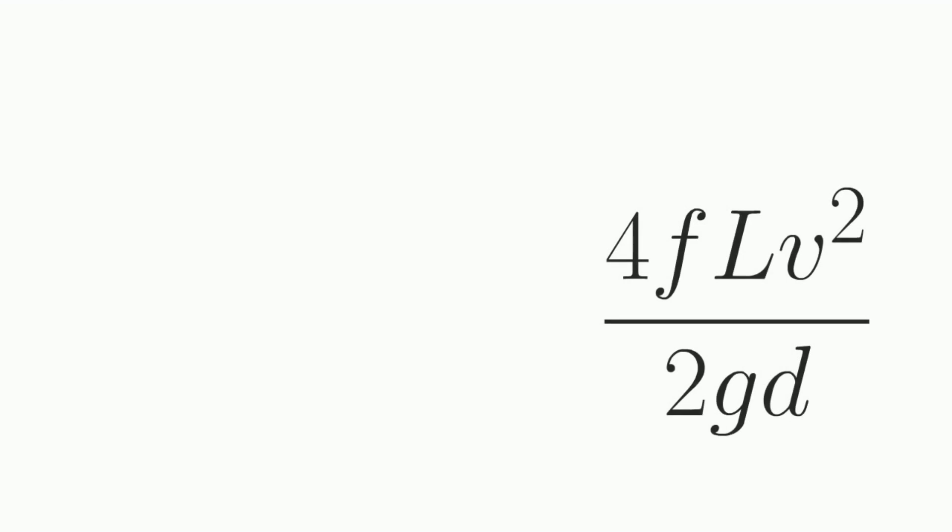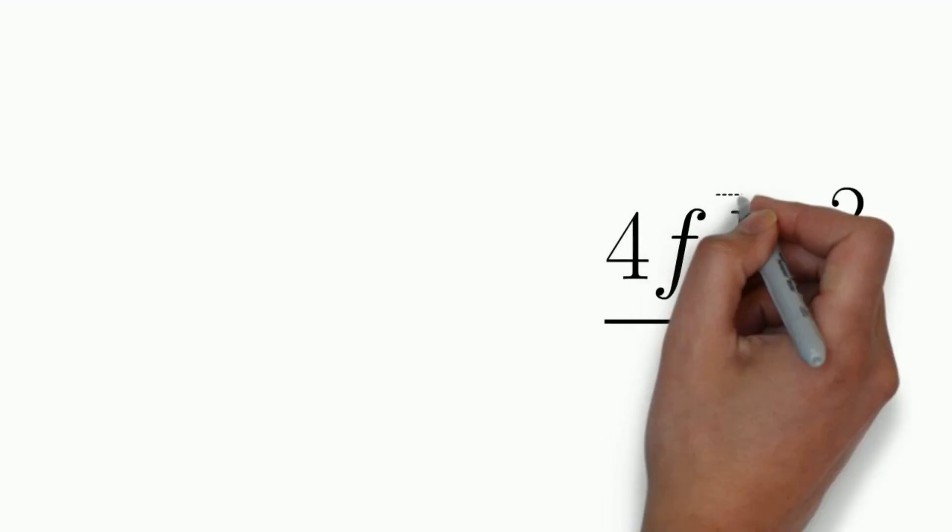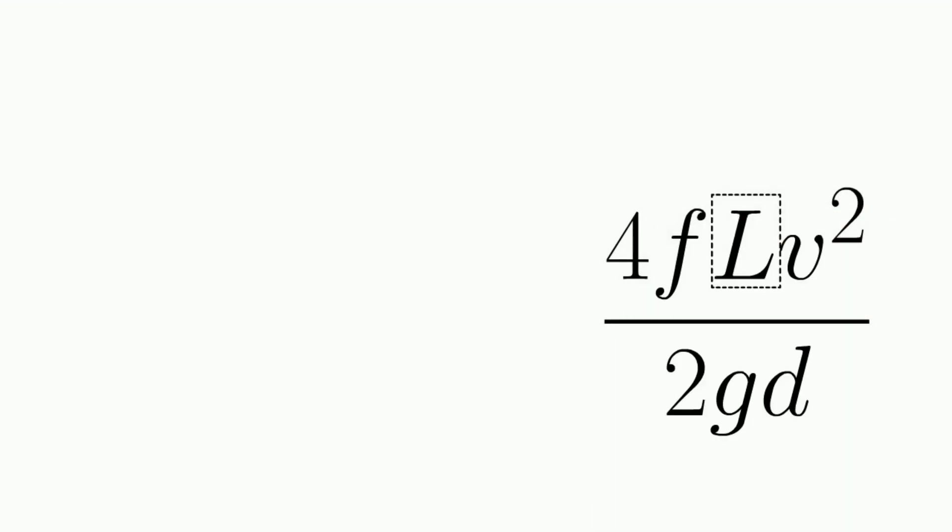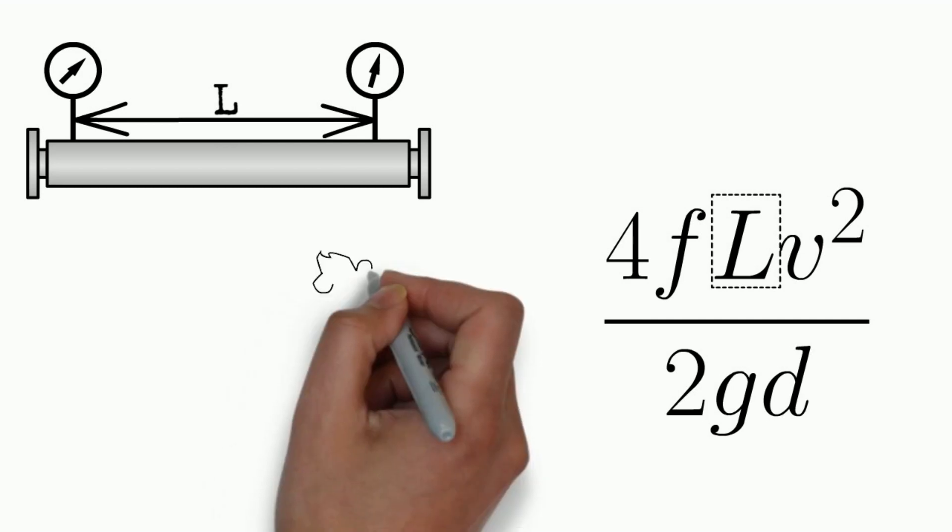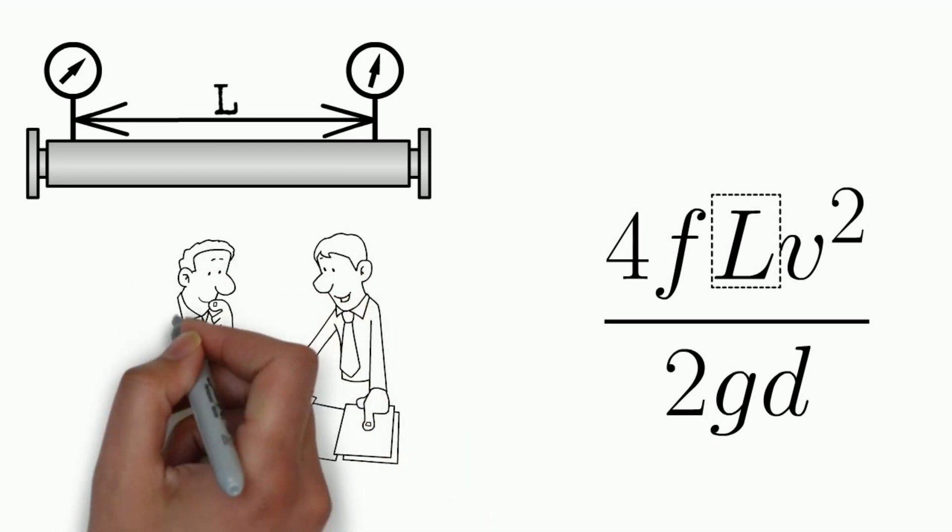The length of the pipe is also a factor in the head loss. As the fluid flows through a long pipe, it will encounter more resistance and thus experience a greater drop in pressure. This is why it's important to minimize the length of piping wherever possible.